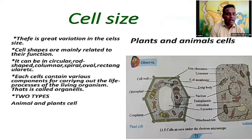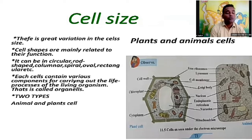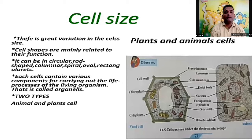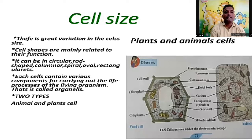Cells can be manufactured using many types of microscope lenses. Cells vary greatly in size. They can be in different shapes — circular, rod-shaped, columnar, spiral, oval, or rectangular. Each cell contains various components for carrying out the life processes of the living organism; these are called organelles.